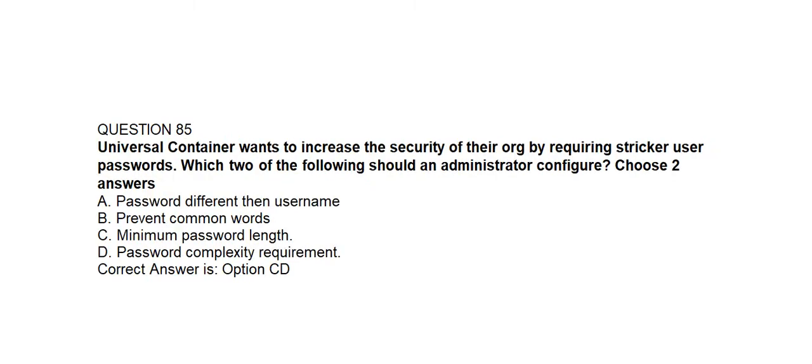Question number eighty-five. Universal Containers wants to increase the security of their org by requiring stronger user passwords. Which two of the following should an administrator configure? Option A: Password different than username. Option B: Prevent common words. Option C: Minimum password length. Option D: Password complexity requirement. Correct answer is Option C and Option D: Minimum password length and password complexity requirement.